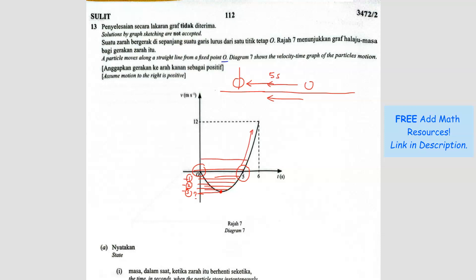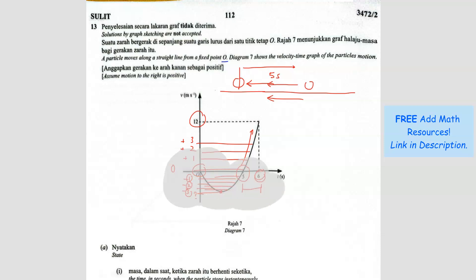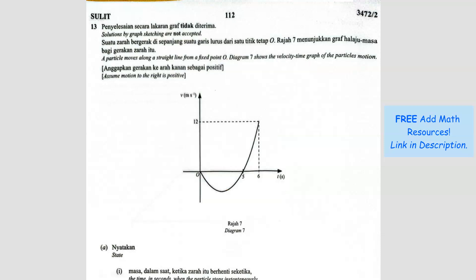After stopping at 5 seconds, the velocity goes positive — let's say 1, 2, 3 and so on — meaning the particle is now moving to the right at an increasing speed, all the way to the 6th second. So in just 1 second, from the 5th to the 6th second, it went from speed 0 to speed 12. I want you to understand the graph first before answering, so it's easier.